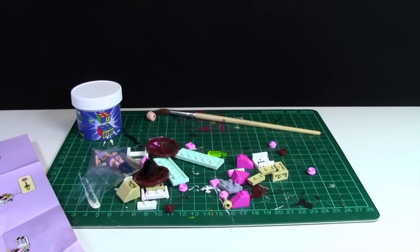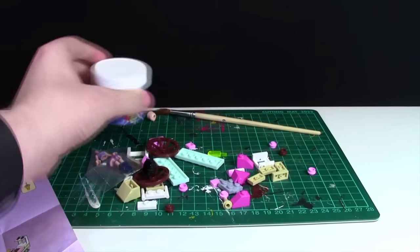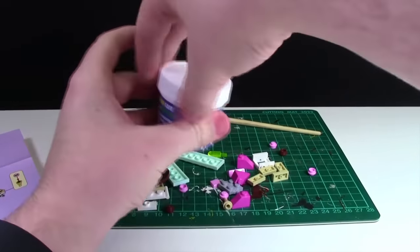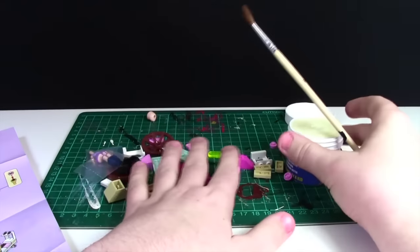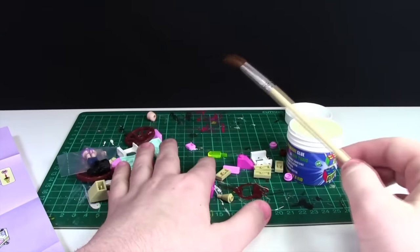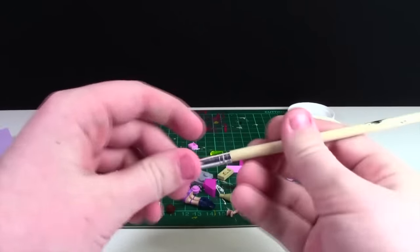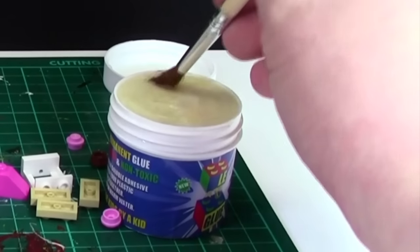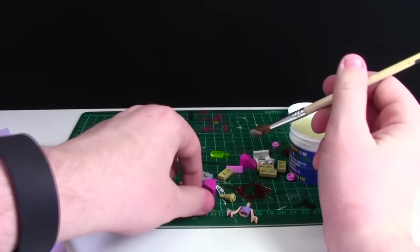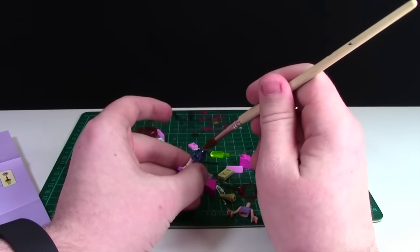I'm going to open up my leg glue and set it right here. Now that all her parts are out of the bag, I'm going to take my paintbrush, dip it into the leg glue, and start applying it to the minifigure parts.